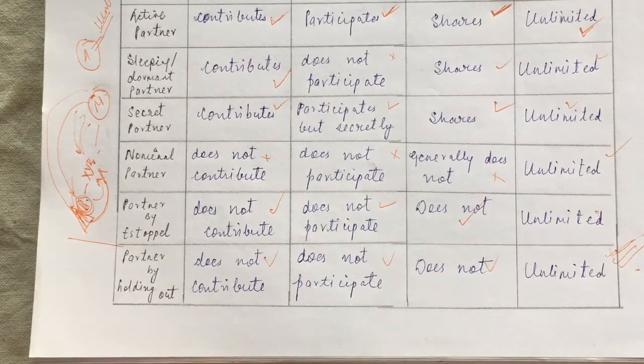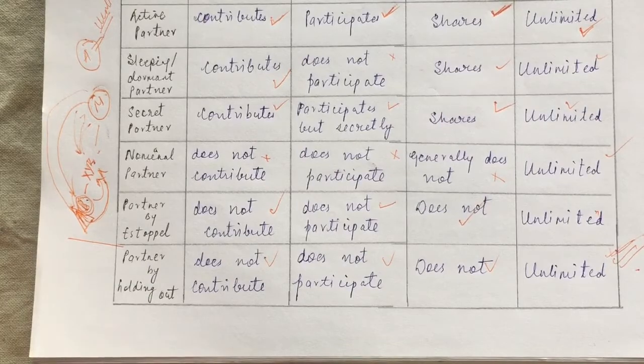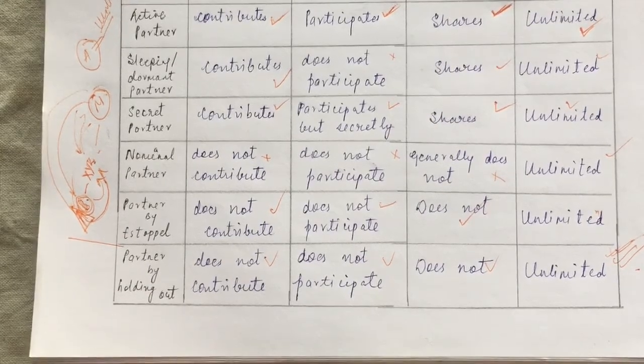There are key differences between partner by estoppel and partner by holding out. I hope you understand the concepts well.